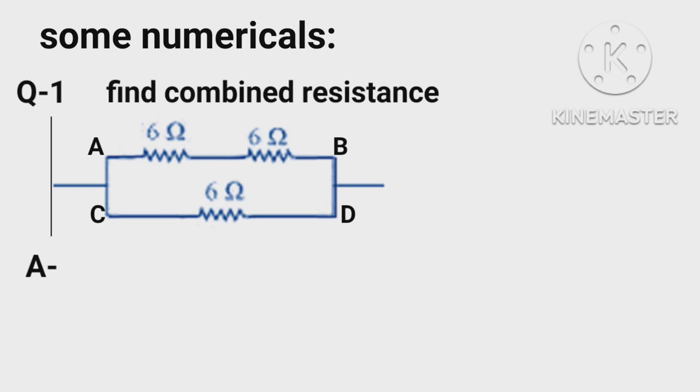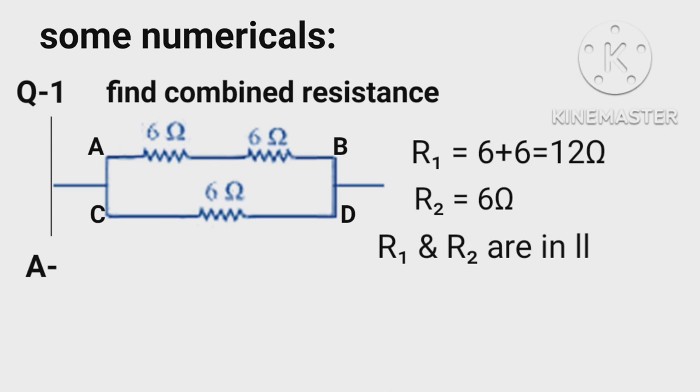Resistances in AB are in series. Therefore R1 equals 6 plus 6 equals 12 ohms, R2 equals 6 ohms. Now R1 and R2 are in parallel. Therefore combined resultant R equals R1 R2 upon R1 plus R2 equals 12 into 6 upon 12 plus 6 equals 4 ohms.